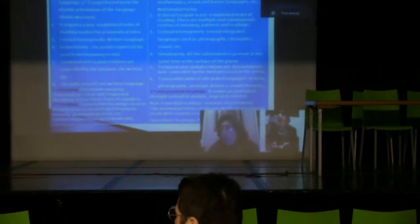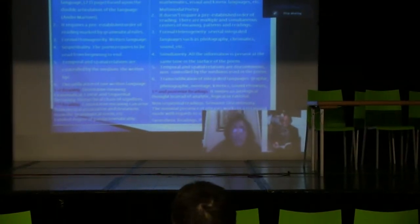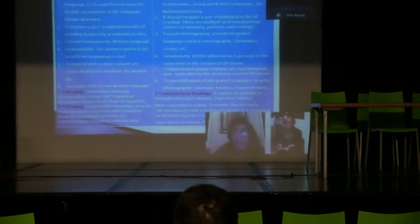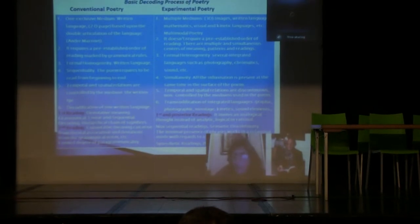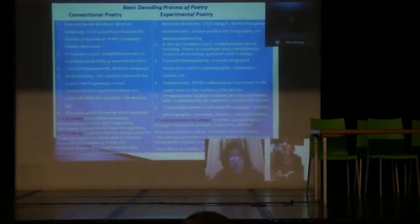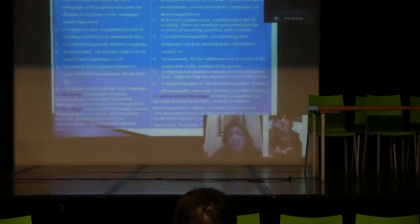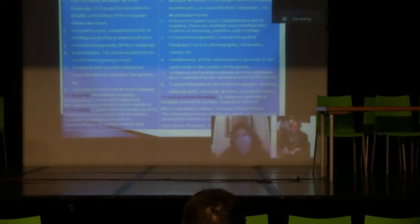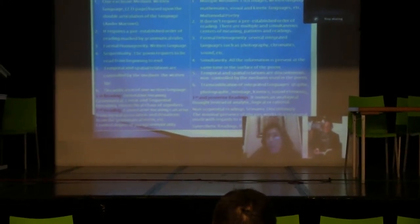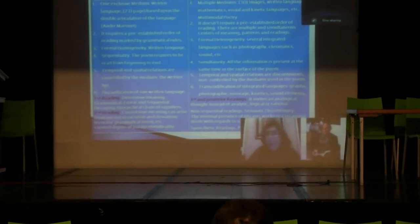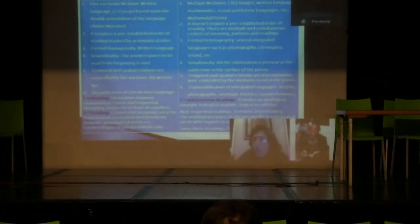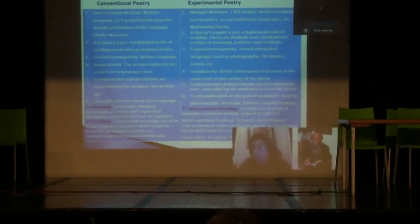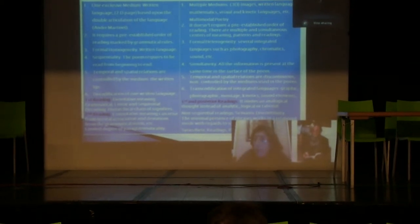The articulation of the language is where structuralists like Andrea Martinet and Saussure come very useful in analyzing the connotation and denotation of the language. But we enter into problems when we go to an experimental point in general, because usually we don't have only one medium but several mediums. We have verbal written languages, but we also have images.